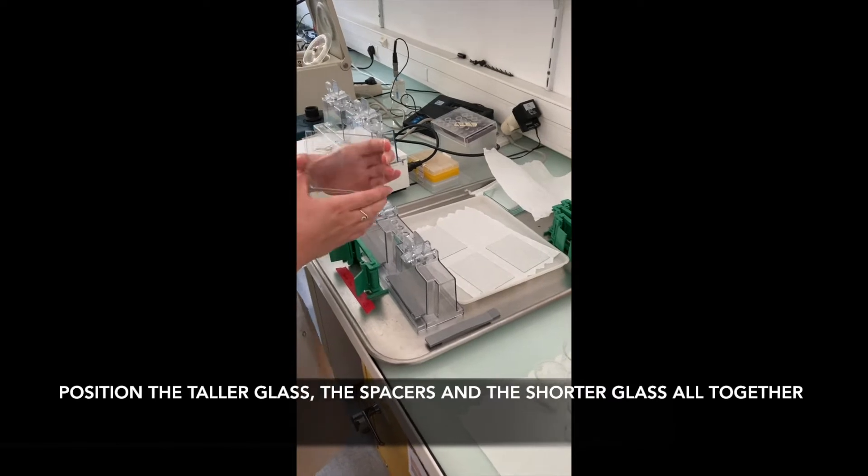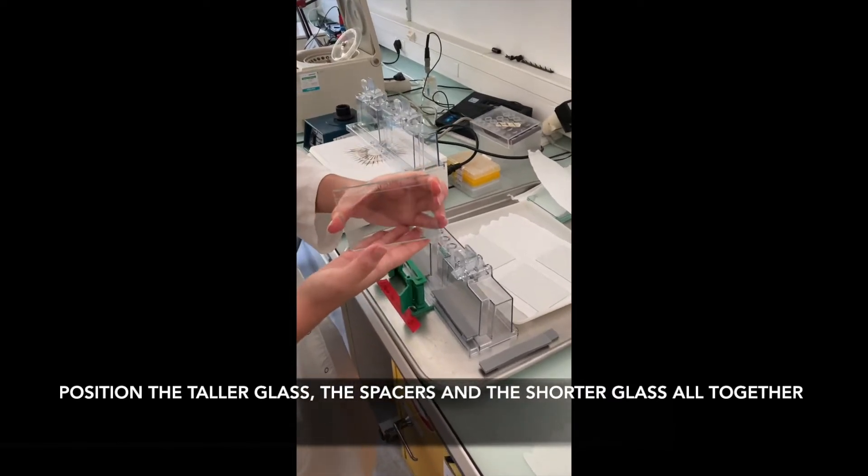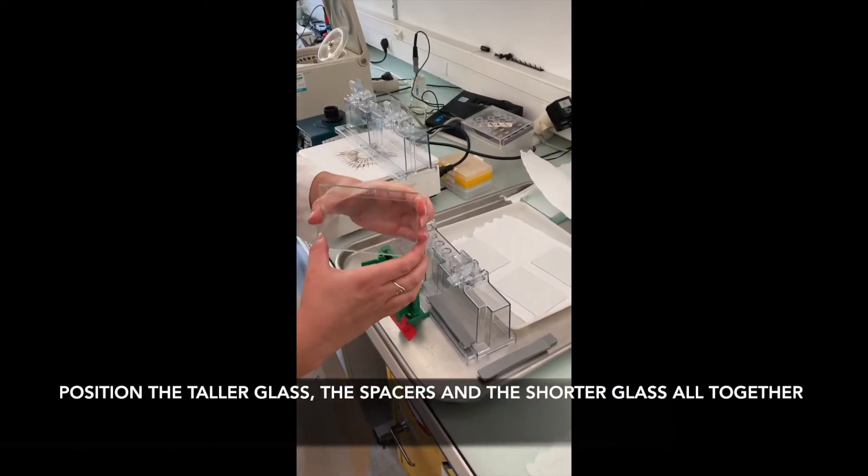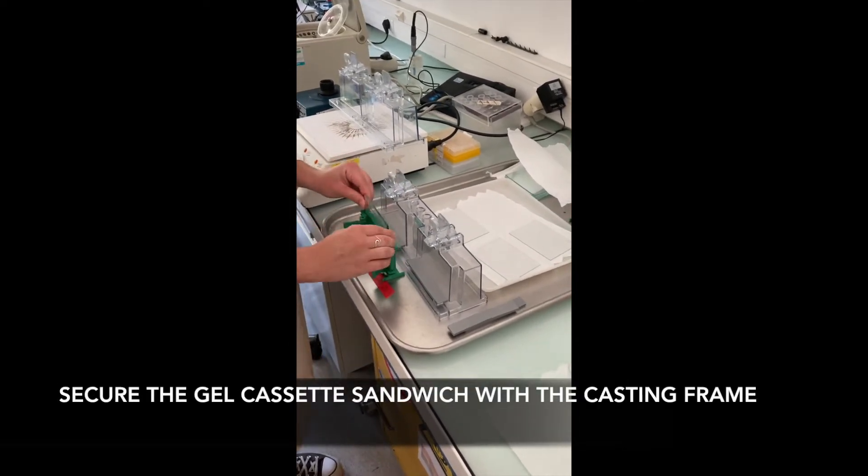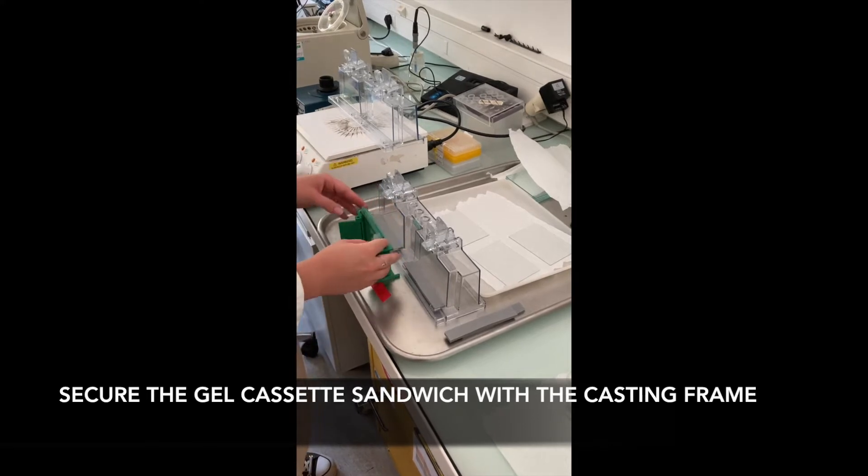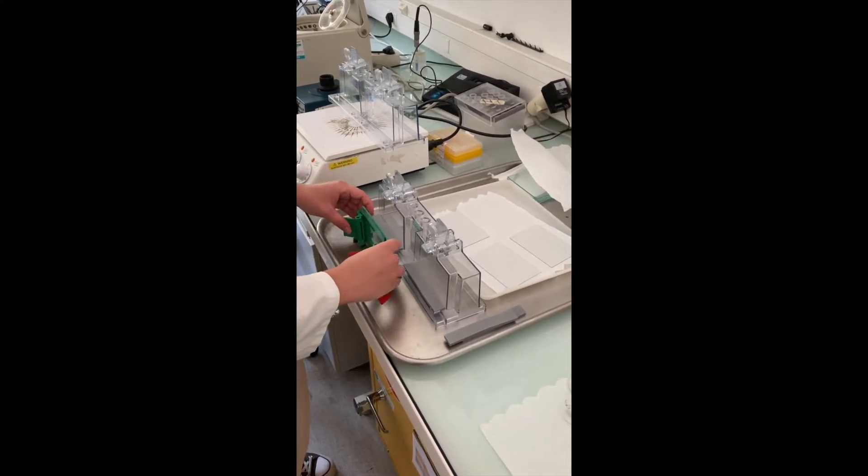The first step will be to position the taller glass, the spacers, and the shorter glass all together. All glass plates should be clean and dry. In this case the gel spacers are permanently bounded to the taller glass. Be sure to perfectly and evenly align these three components which will form the gel cassette sandwich.